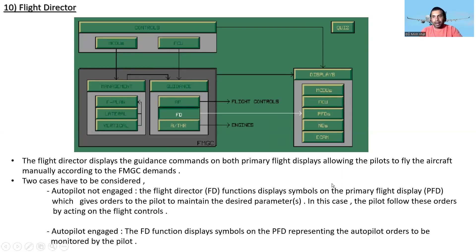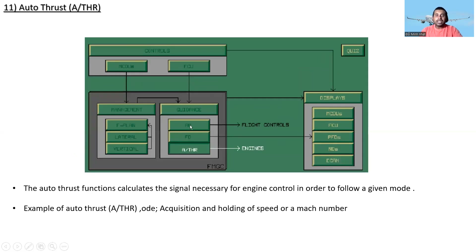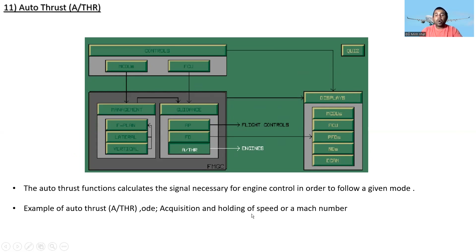The auto thrust function calculates the signals necessary for engine control in order to follow a given mode. An example of an auto thrust mode is the acquisition and holding of speed or Mach number.